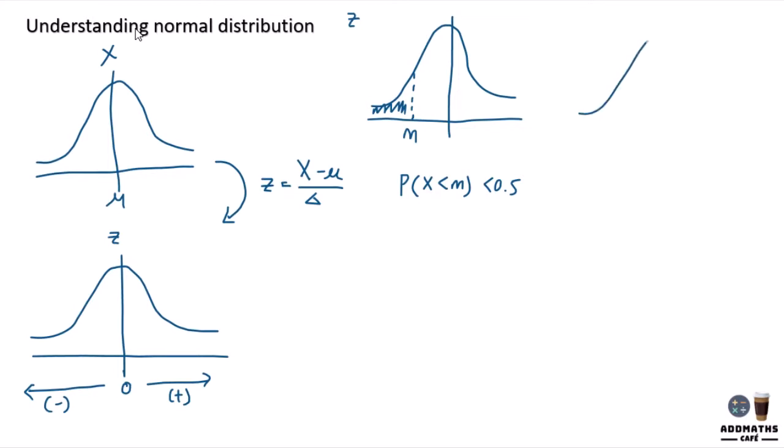So let's say I have my m here and you are finding this shaded region. So this means P(z less than m) but then your area now is more than 0.5 because this area is more than half.